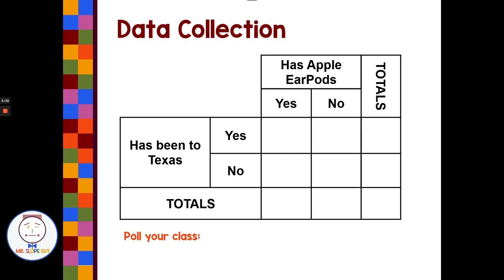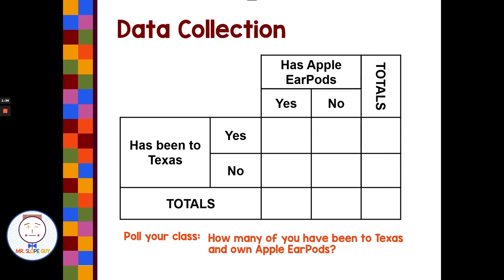The first thing we're going to do is look at data collection with a class. We're going to survey them and fill out this two-way table. Our two variables are 'has Apple EarPods' and 'has been to Texas' — counting a trip to a Texas airport as having been to Texas. Our first poll question is: how many of you have been to Texas and own Apple EarPods? We see 11 hands raised for yes to both.